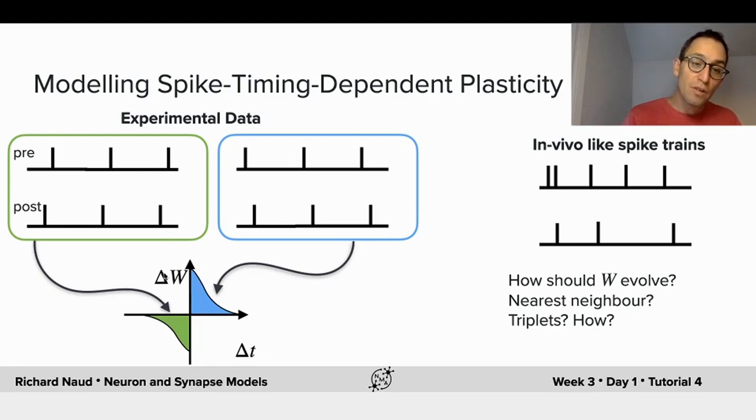Then we measure the synaptic weight, and we see then that when post precedes pre, we get LTD, and that when pre precedes post we get LTP. That's very nice, and it's quite convincing.